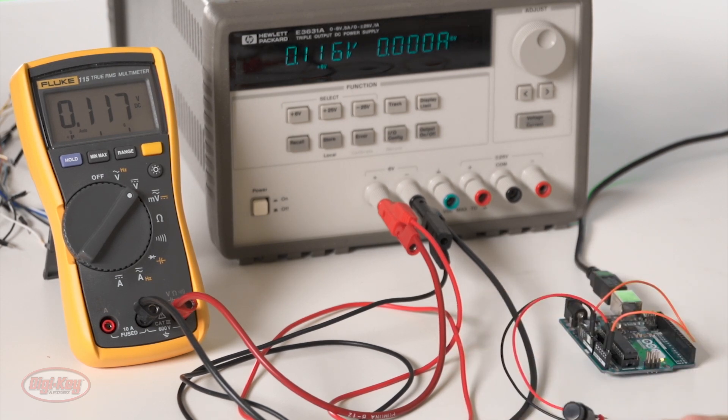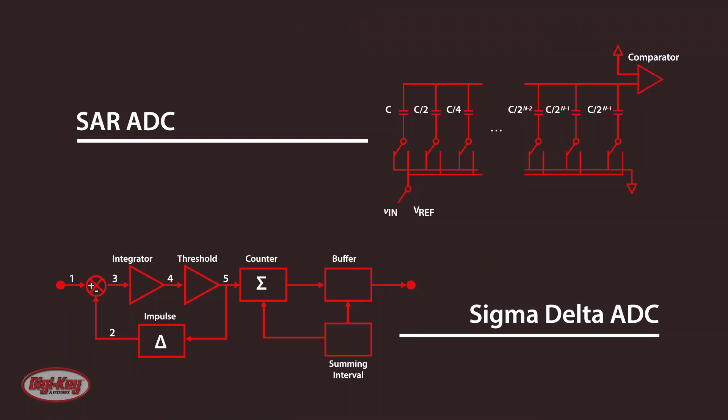There are also different types of ADCs, which would take too long to cover here, but high-resolution sigma-delta ADCs and high-speed successive approximation ADCs are two of the most popular due to the balance they offer between performance and cost.